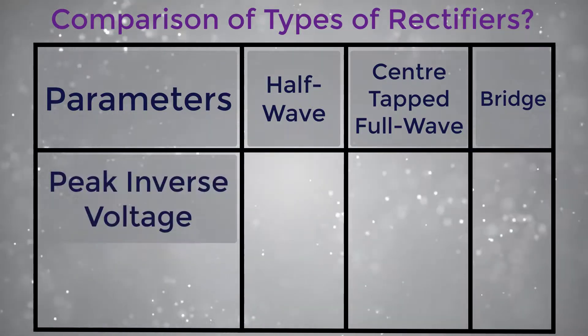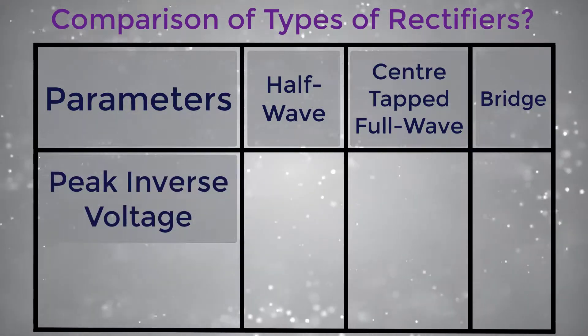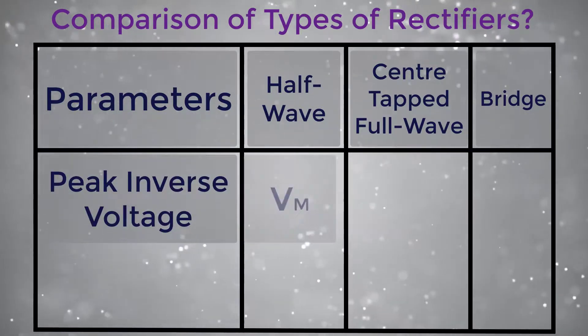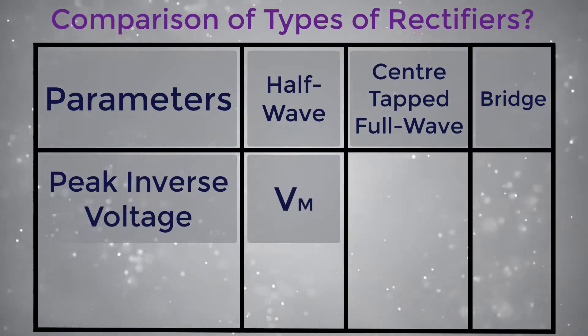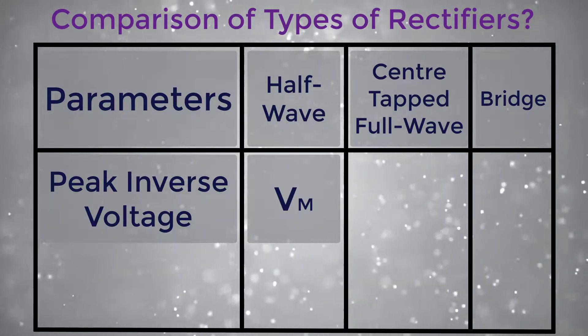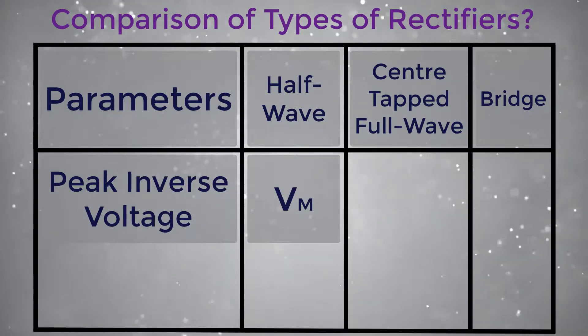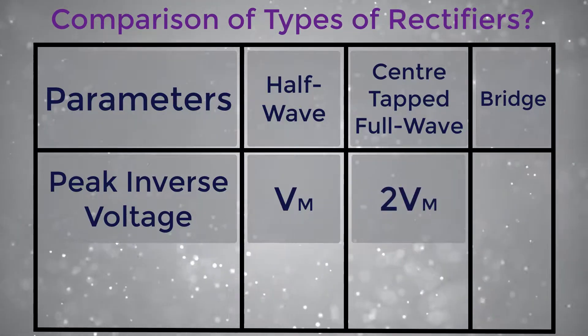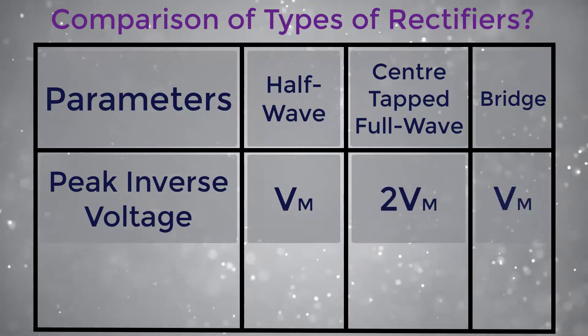Peak inverse voltage: for half wave it is Vm, for center tapped full wave it is 2Vm, and for bridge it is Vm.